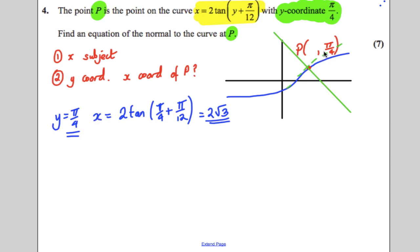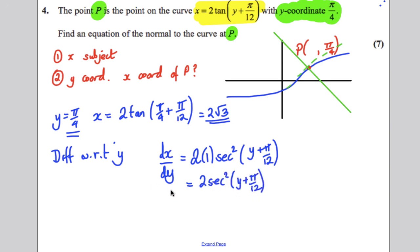Now we need the gradient. In order to get the gradient, we need dy by dx at this point. So x is the subject of the formula. All we can do at the moment is differentiate with respect to y. So dx by dy would be equal to the differential of this, which would be 2. The differential inside the brackets here, the differential of y plus pi by 12 is simply 1. So it would be 2 times 1. The differential of tan is sec squared. And you evaluate it at the original bracket, y plus pi by 12. Which is simply 2 sec squared, y plus pi by 12. So that's dx by dy.